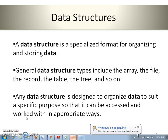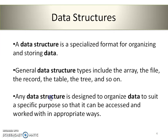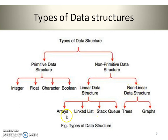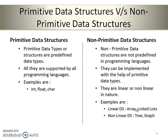Now let's move to the next slide, which explains types of data structures. Mainly there are two types: primitive data structures and non-primitive data structures. Primitive data structures are integer, float, character, boolean, etc. Non-primitive data structures are further divided into two types: linear data structure and non-linear data structure. Here the examples of all types of data structures are explained and we'll go through them one by one.